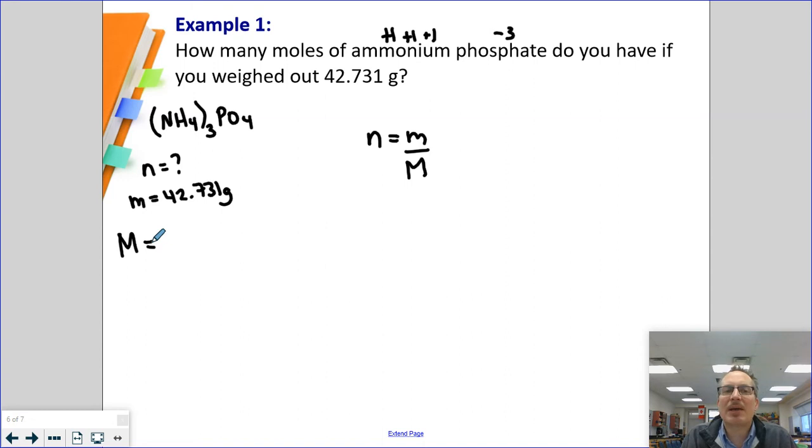I can do this straight in my calculator. In my calculator, I have, and this is why I write out the formula, three nitrogens. So that's going to be 3 times 14.01 plus 12 hydrogens, 12 times 1.01 plus 1 phosphorus, which is 30.97 plus 4 oxygens, 4 times 16.